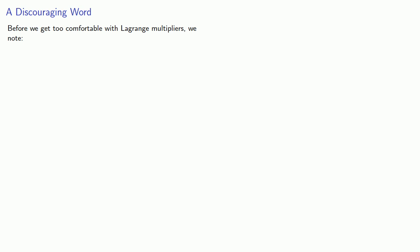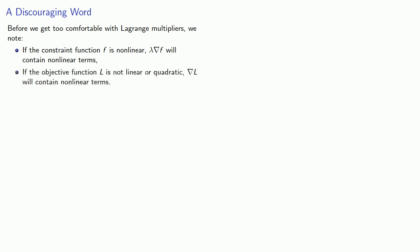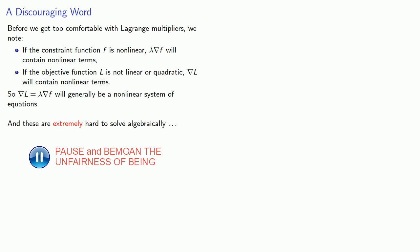Now, before we get too comfortable with Lagrange multipliers, we note that if the constraint function f is nonlinear, lambda times the gradient will contain nonlinear terms. And likewise, if the objective function l is not linear or quadratic, the gradient of l will contain nonlinear terms. And so in general, the equation we're trying to solve will generally be a nonlinear system of equations. And the problem is these are extremely hard to solve algebraically, although numerical solutions do exist.